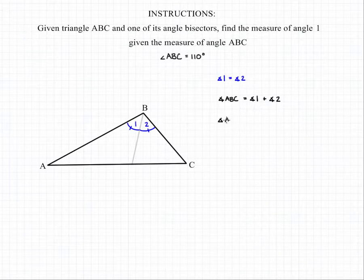Because we're looking for the measure of angle 1, we can actually eliminate the measure of angle 2 by substituting in another measure of angle 1 because we know both of those measurements are going to be equal.